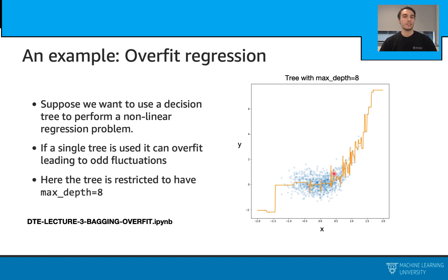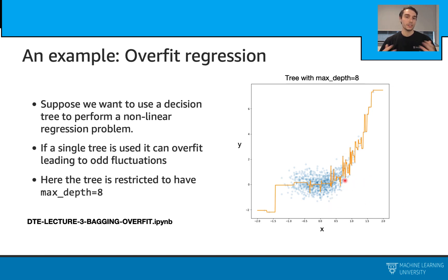Let's start with the decision tree. In this case, our decision tree has a maximum depth of 8. When we fit on this dataset, we see this orange line here for the response of our tree. When we look closely, we see that we have a lot of fluctuations with this model. These fluctuations usually refer to an overfitting problem, and we see that these fluctuations even become higher in the areas where we don't have too many data points.